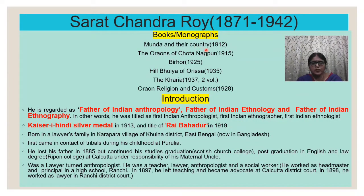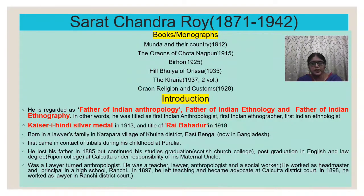Here are some books and monographs written by him. Five monographs were written by him: the first was Munda and Their Country, written in 1912; the second was The Oraon of Chotanagpur, written in 1915; the third was Birhor, written in 1925; the fourth was Hill Bhuiya of Odisha, 1935; and the fifth was Kharia, written in two volumes in 1937. He also wrote a book on Oraon religion and customs in 1928.